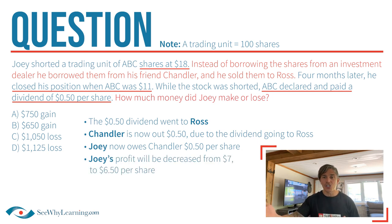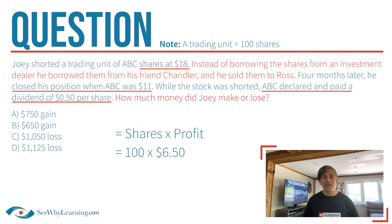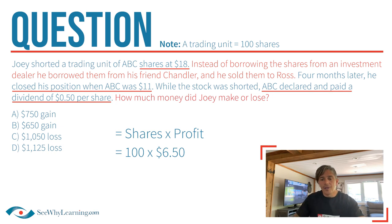So instead of Joey making $7 per share, he has to pay $0.50 per share to Chandler, meaning he's only made $6.50 per share. We take the 100 shares he shorted, multiply by his profit of $6.50 per share, and find out he made $650. Let's select that answer.